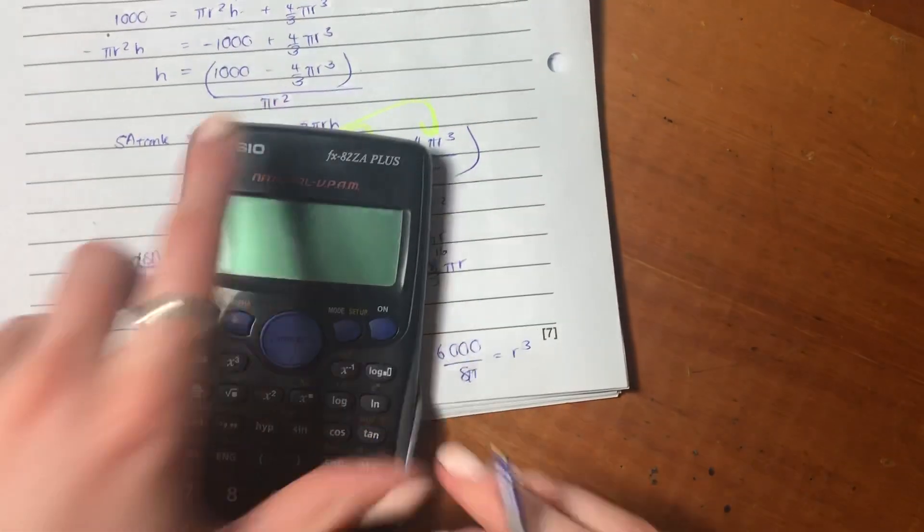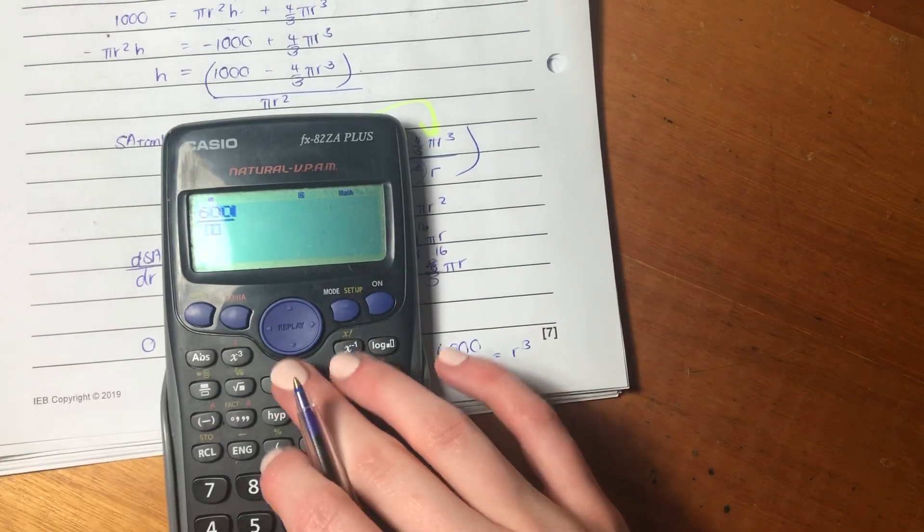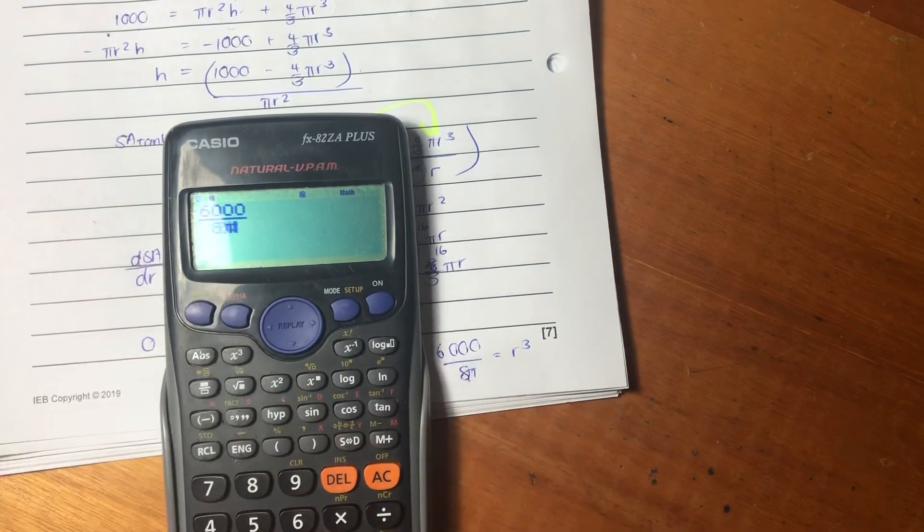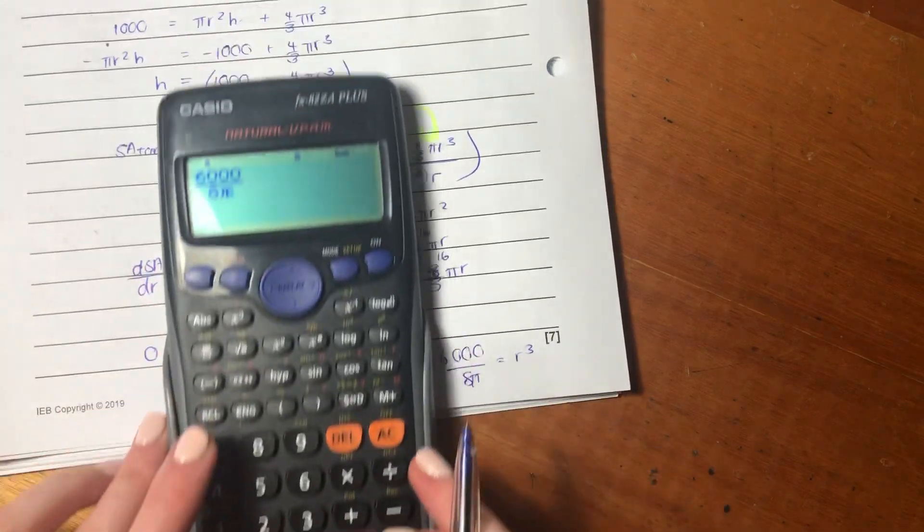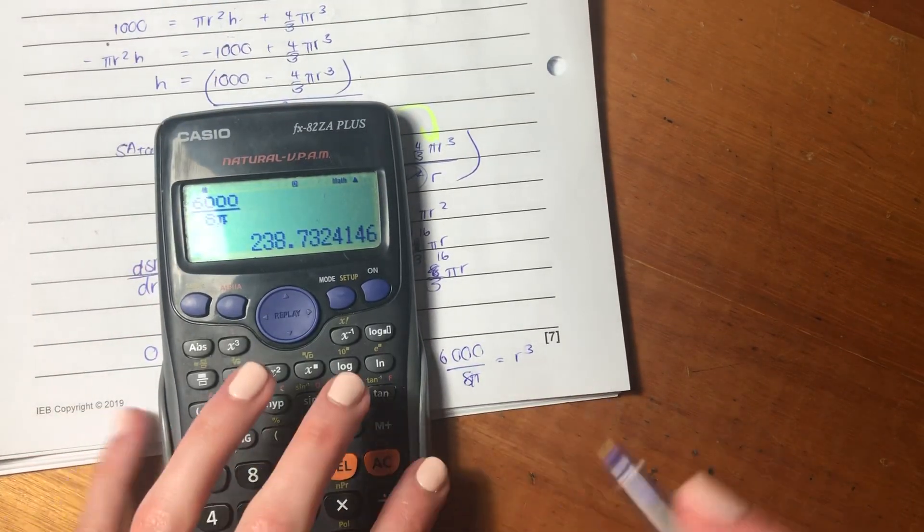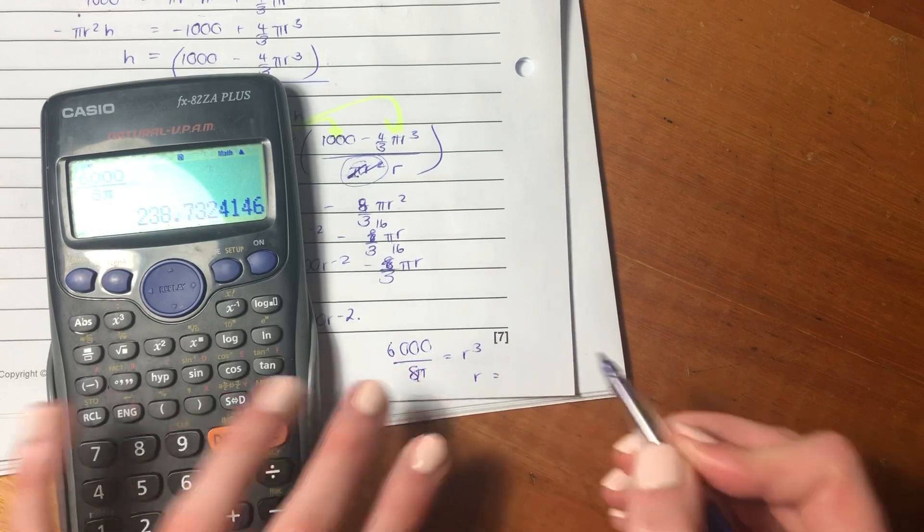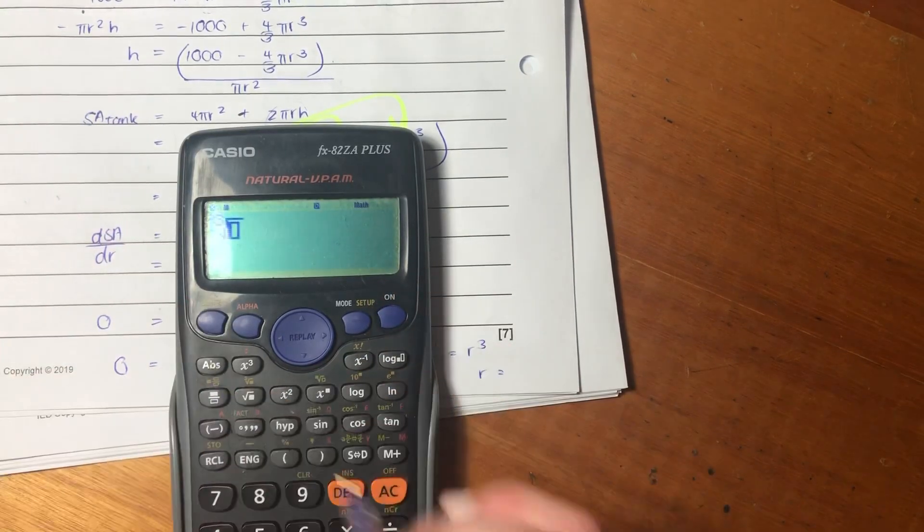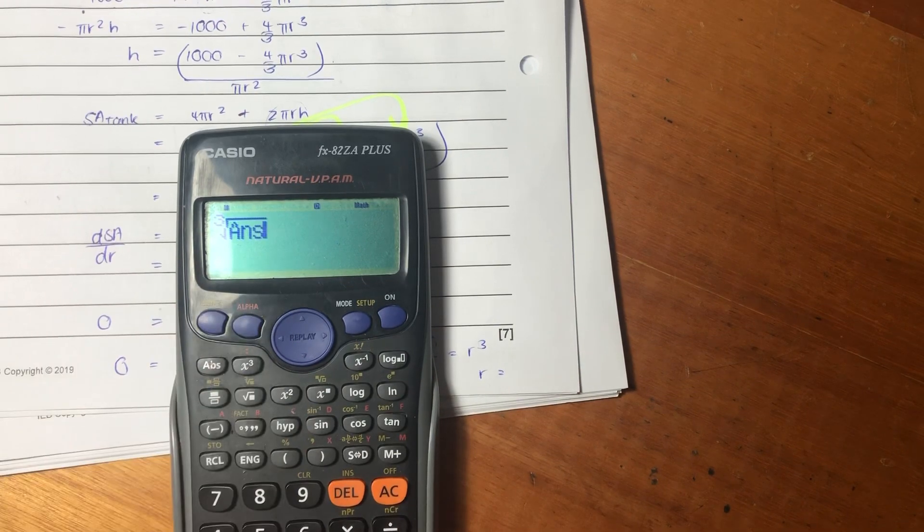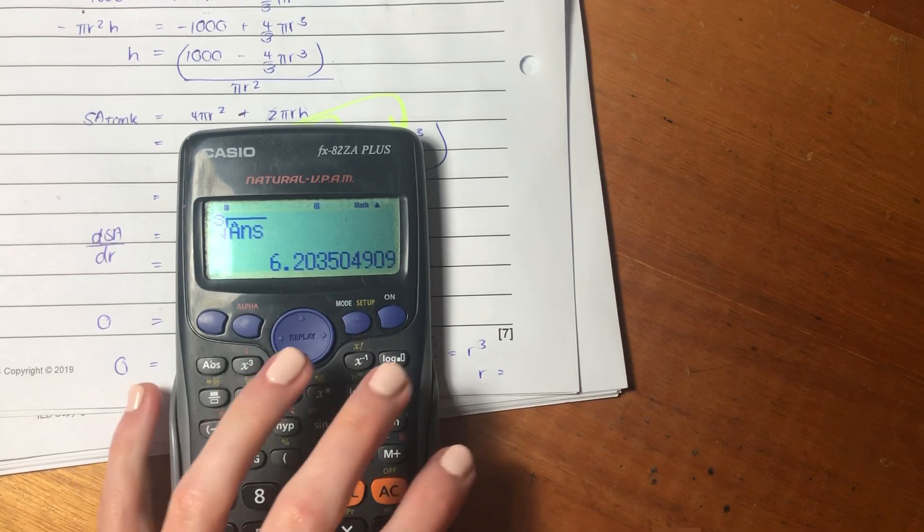So, let's put that into our calculator. 6000 over 8π. Remember that pi sign at the bottom there? Pi sign at the bottom. Put that into our calculator. Now, we just want r. So, let's put it into a cube root. And there's the value of r.